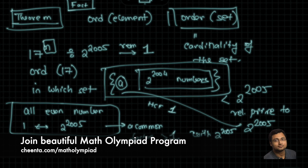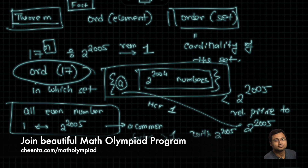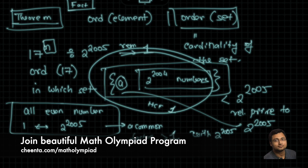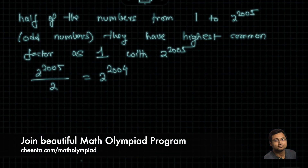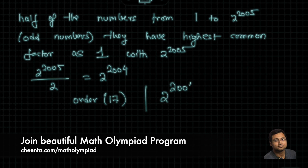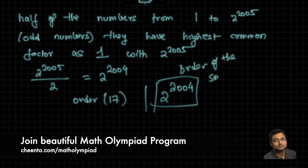Since 17 is an odd number, it is in this set. By the main theorem, the order of 17 divides 2^2004, which is the order of that set. So the order of 17 divides 2^2004. This means n, which is the order of 17, also divides 2^2004.